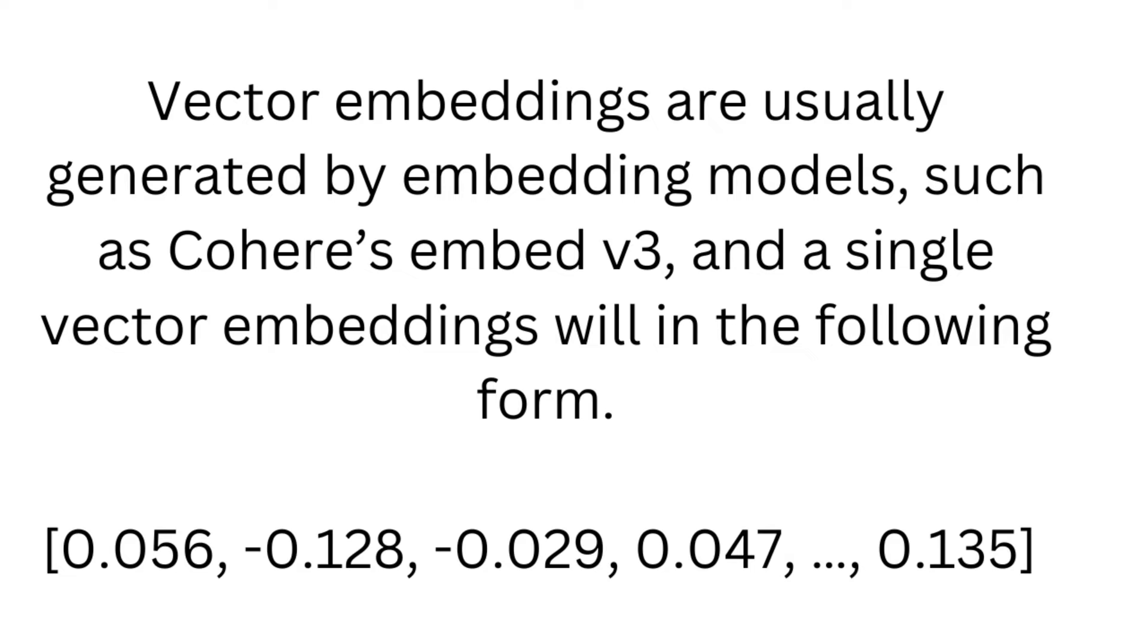A binary quantization example: vector embeddings are usually generated by embedding models such as Cohere's Embed v3, and a single vector embedding will be in the following form. That is, because these embeddings have very small absolute numbers close to 0,